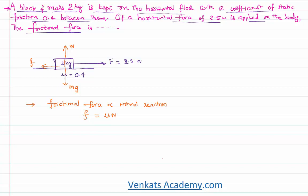When the bodies are in the state of rest, the frictional force is called static frictional force. The body will experience a maximum frictional force called the limiting frictional force, which equals μs into normal reaction. In this case, that is μs into mg — μs is given as 0.4, mass is 2 kg, and g is 10, so the limiting frictional force equals 8 Newton.